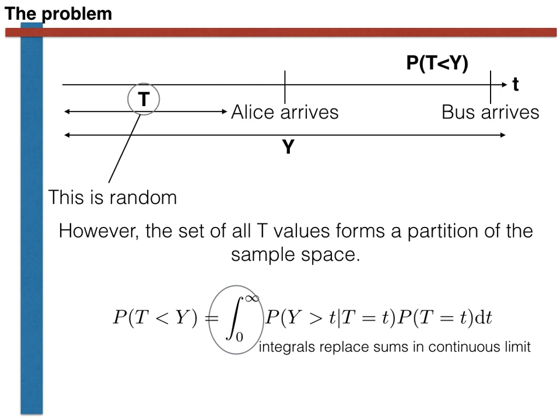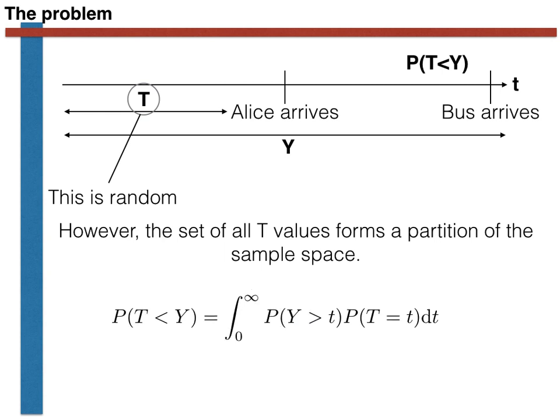The next important thing to note is that the question gives us no reason to believe that the random variables capital T and capital Y are correlated. Alice's movements will not affect those of the bus, after all. This ensures that we can rewrite the conditional probability in the integral as an absolute probability. This is a rather useful realization, as we now find ourselves in a position where we know all the required probabilities.